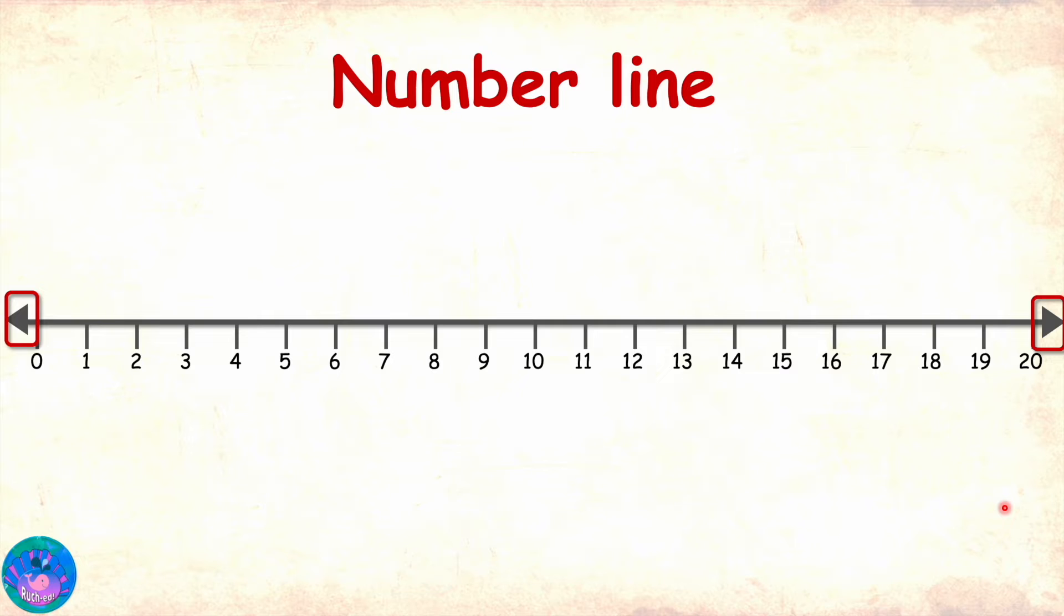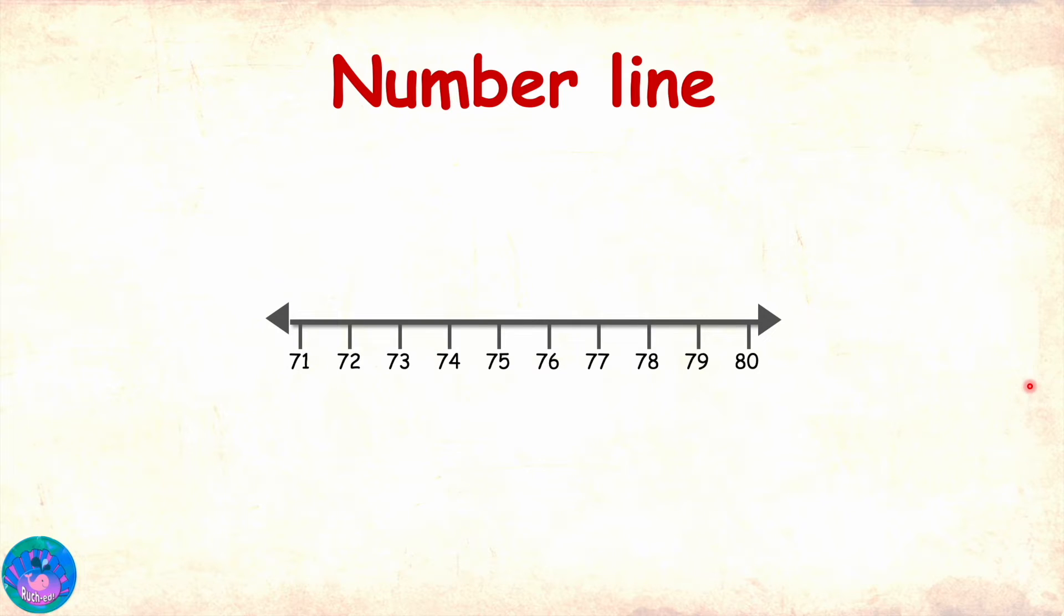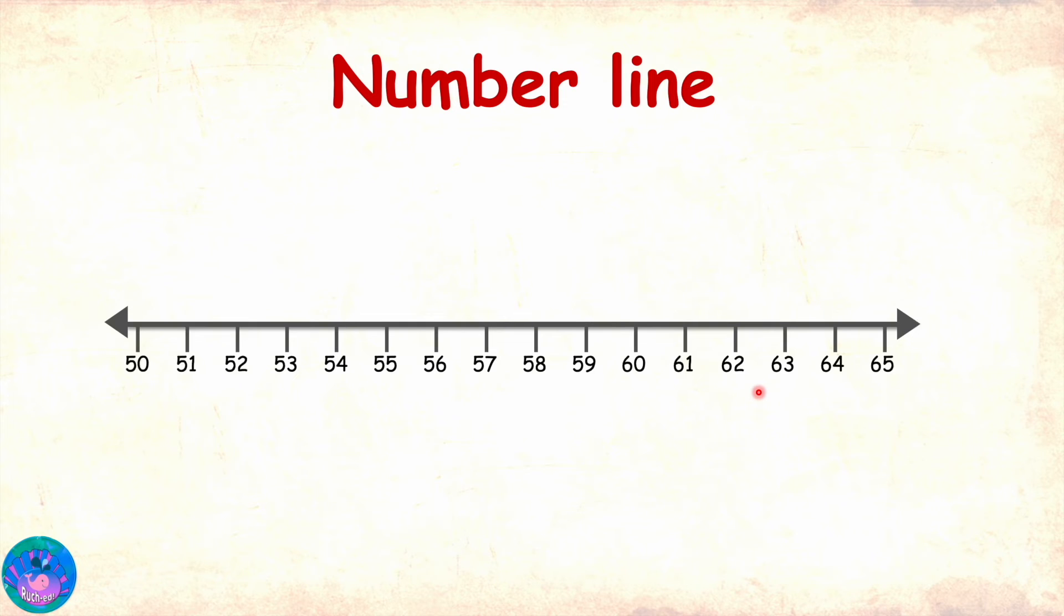I can also see arrows placed at either end of the line. Why do we have that? The arrows indicate that we are only seeing a part of the number line and that the number line can be extended to show more and more numbers. So, on this number line, we can see numbers from 0 to 20. This is a number line with numbers 71 to 80. And this is a number line from 50 to 65.